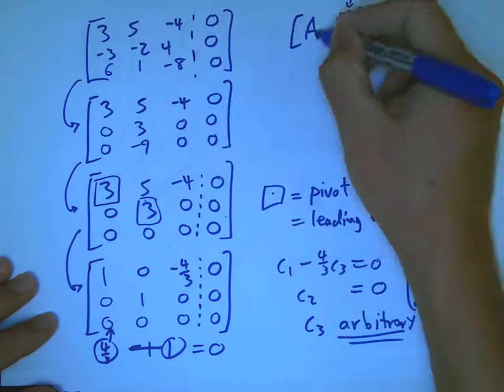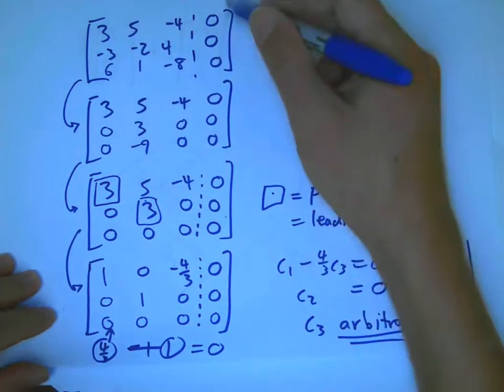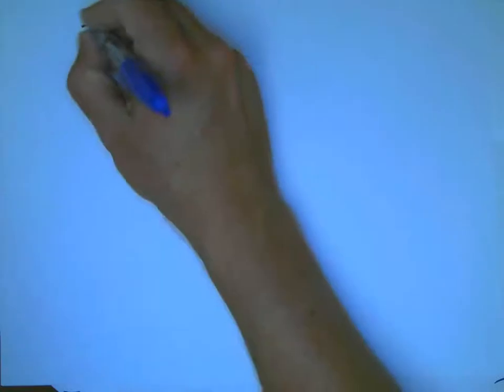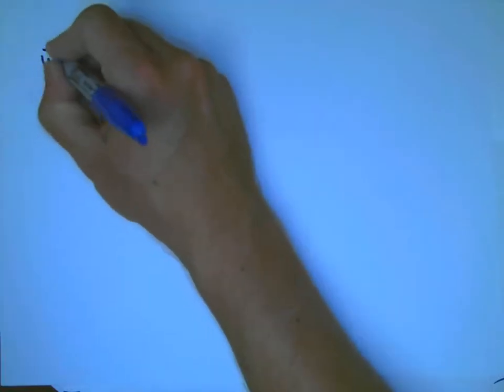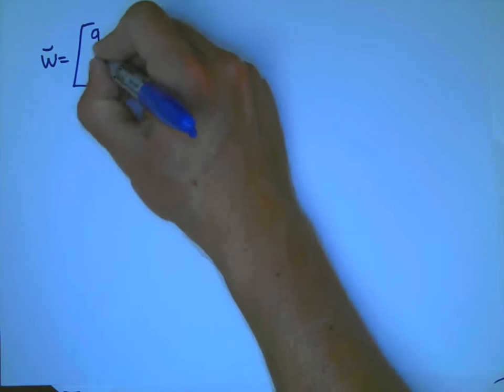What we're going to do is we're going to take the same A matrix, the same coefficient matrix, and we're going to put something random on the right-hand side. So let's say w is a, b, c.